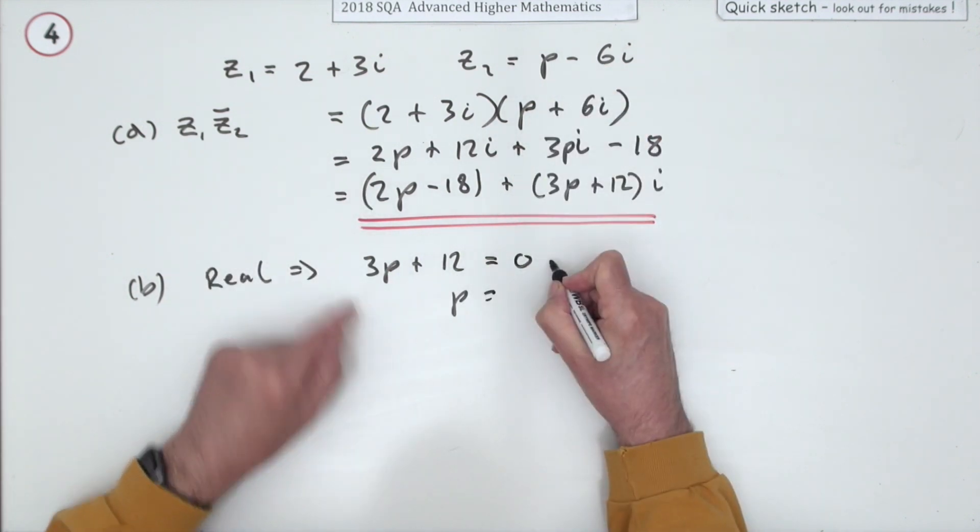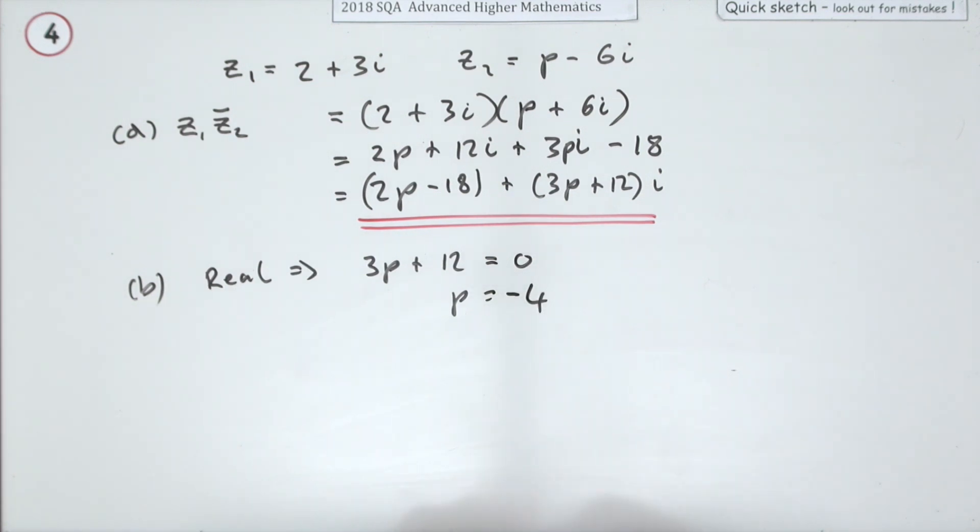Well, there you go. Negative 12 divided by three, negative four. Not a lot to that then.